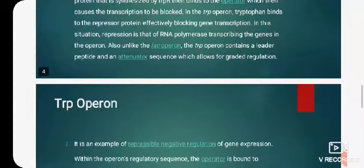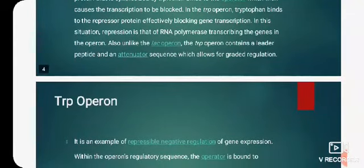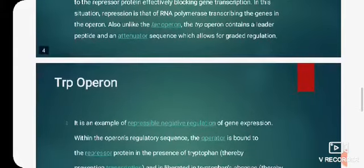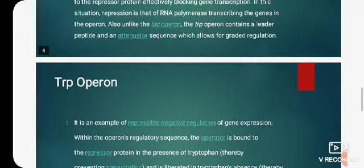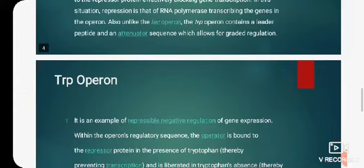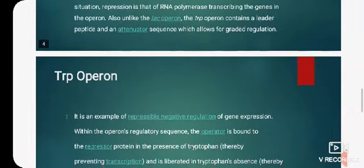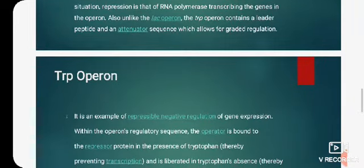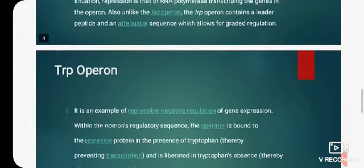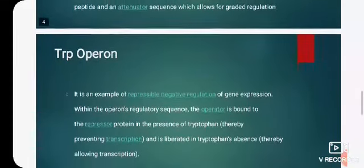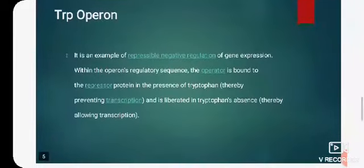Also, unlike the lac operon, the TRP operon contains a leader peptide and an attenuator sequence which allows for graded regulation.